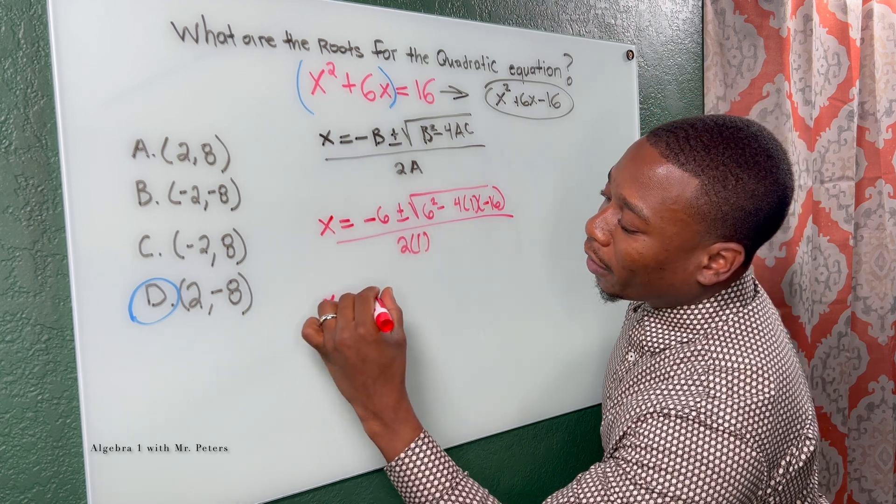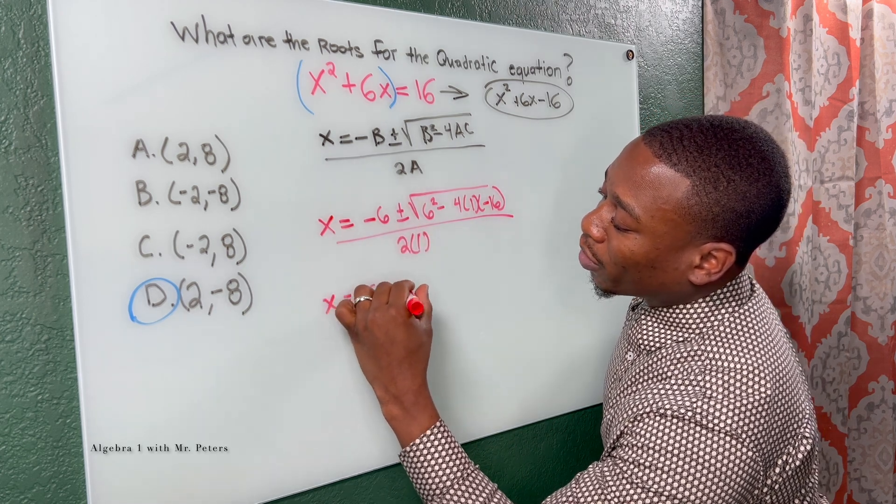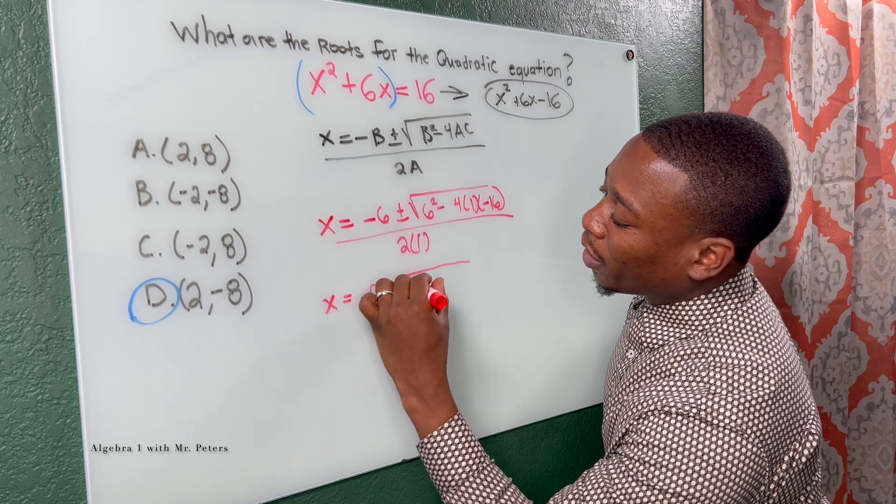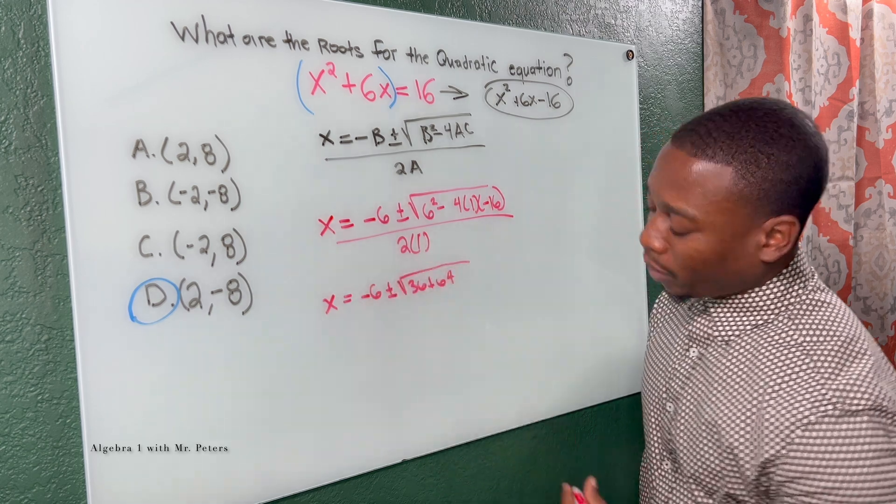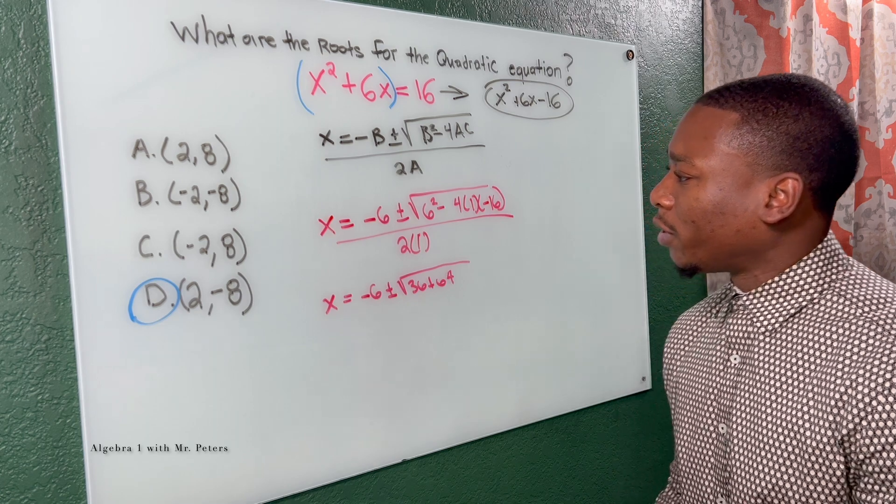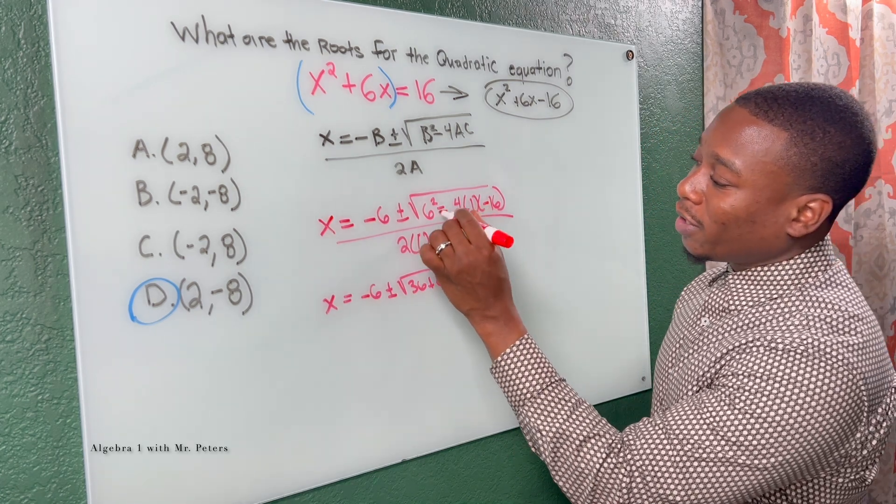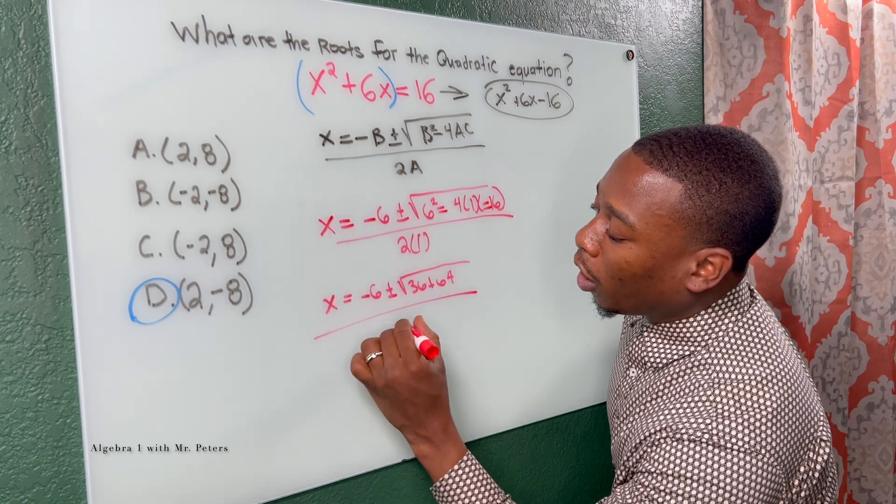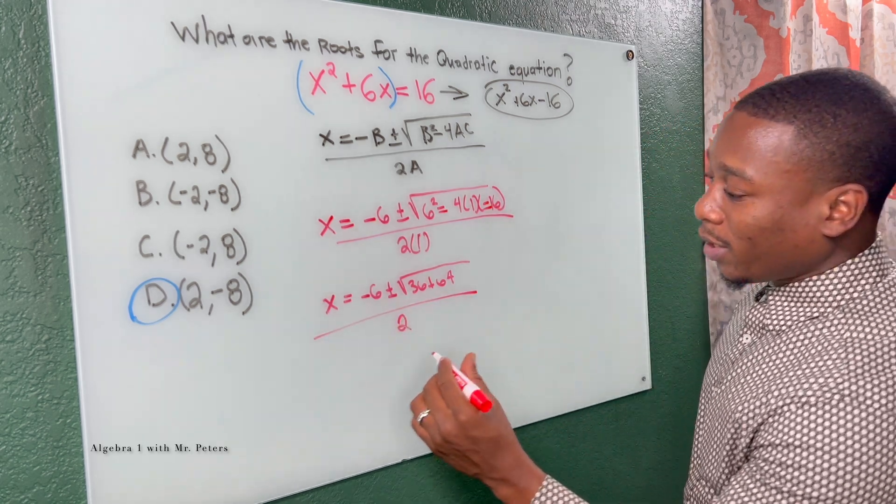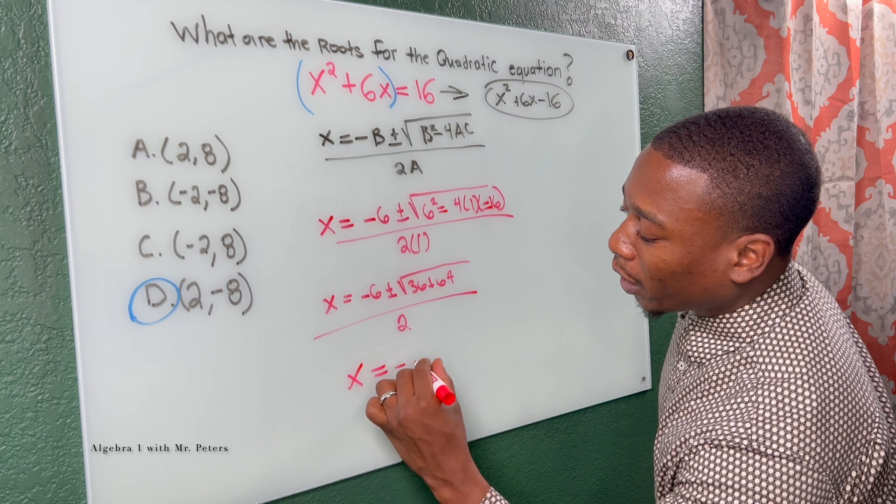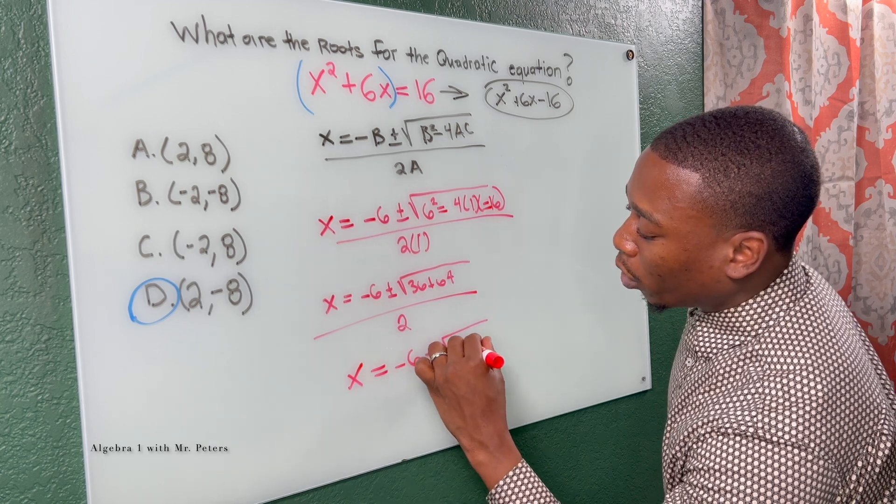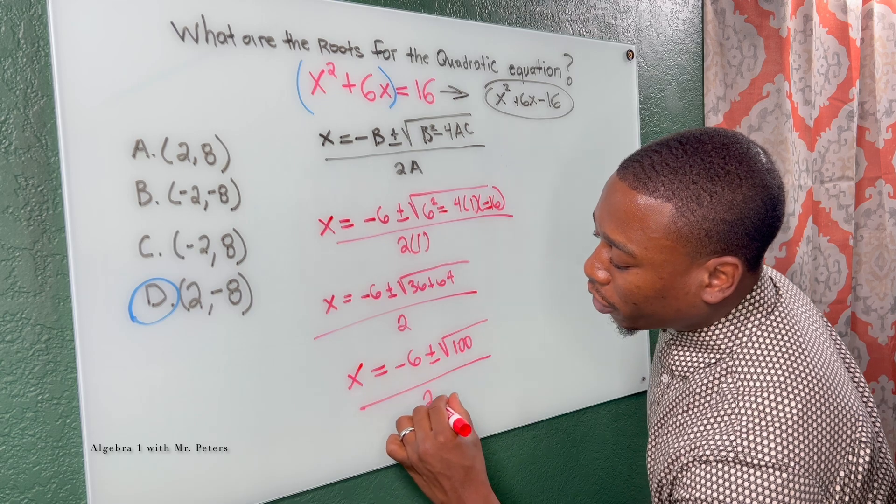So now when I simplify, x is equal to negative six plus or minus 36 plus 64, I think that's what you get when you multiply four and 16. Yep. Positive because this is negative, that's negative, all over two. Now once we simplify, we have x is equal to negative six plus or minus the square root of 100, all over two.